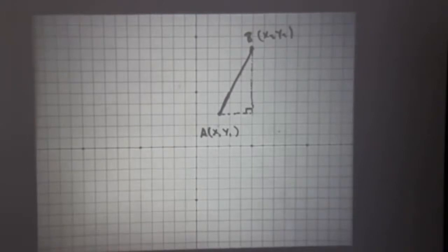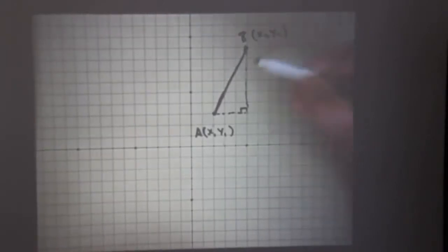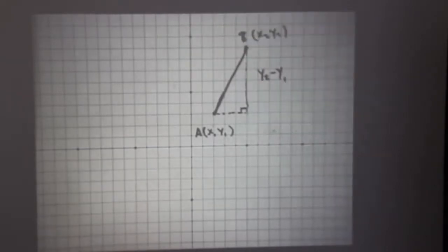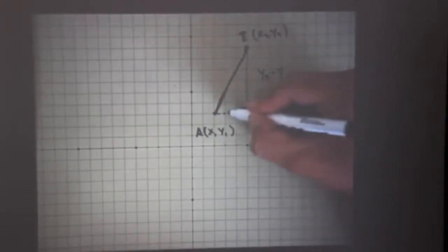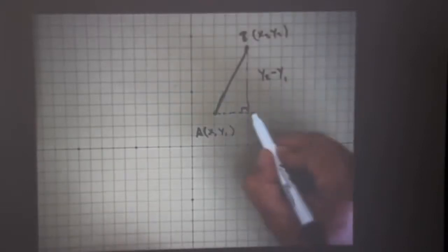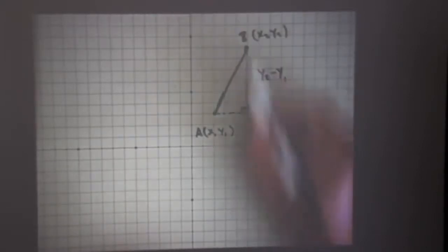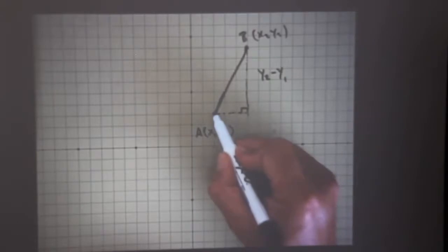And we can calculate the side lengths of this right triangle. Well this side length here is the difference between y2 and y1. So we're going to call it y2 minus y1. This horizontal line segment or piece of this right triangle in my slope triangle is the difference between the value at x2 and right here at x1.